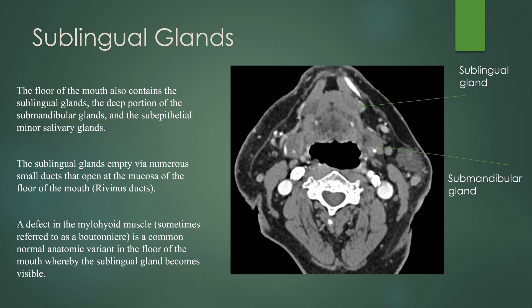The sublingual glands are also contained within the floor of mouth, and you also have subepithelial minor salivary glands within the floor of mouth. The sublingual glands empty via numerous small ducts at the mucosa of the floor of the mouth called the rivinus ducts. A defect in the mylohyoid muscle, called a mylohyoid boutonniere, is a normal anatomic variant in the floor of mouth where that sublingual gland becomes visible. Here's that sublingual gland anterior to the submandibular gland.